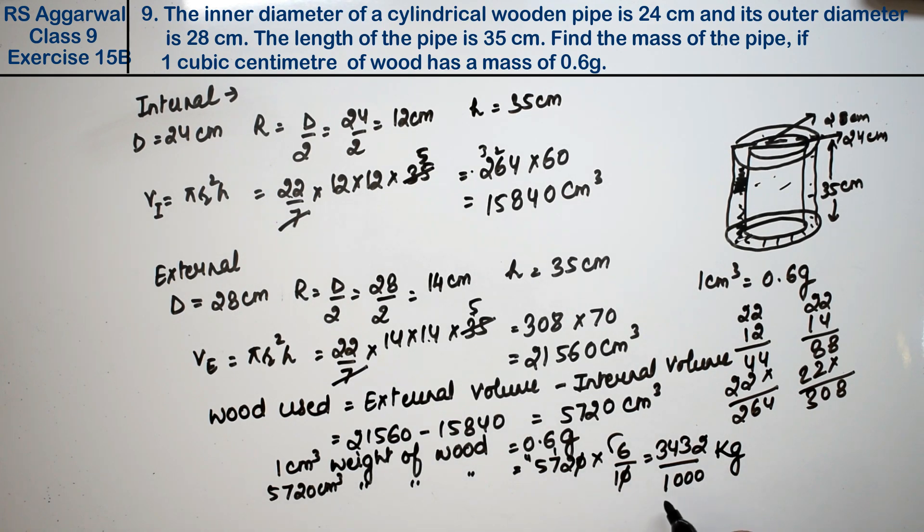So we divided this by 1000, so this became: here instead of grams, what will come? Kg will come, right friends. Below there are 3 zeros, so that means point will come after 3. 3.432. Point came after 3. Kg is the answer.